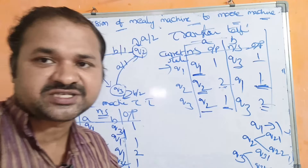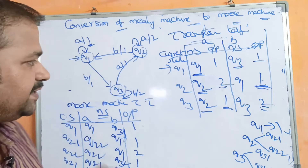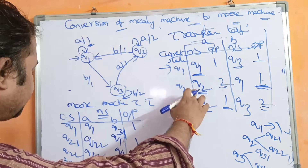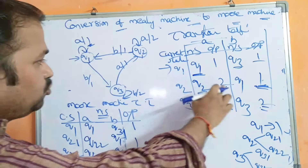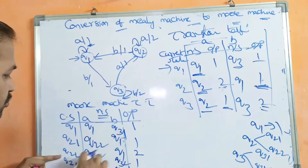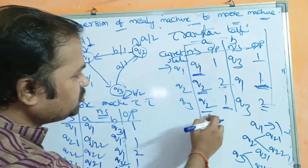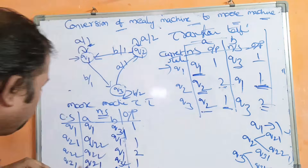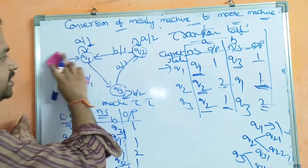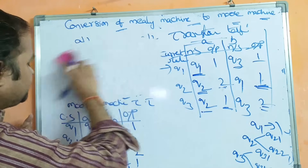Q2 on a goes to Q2-2 since the output is 2. Q3 on a goes to Q2-1, and Q3 on b goes to Q3-2. The same transitions apply for Q3-2. This completes the Moore machine transition table.